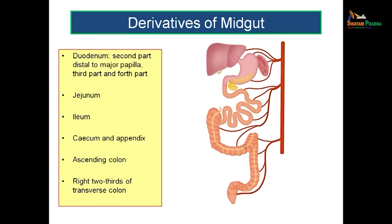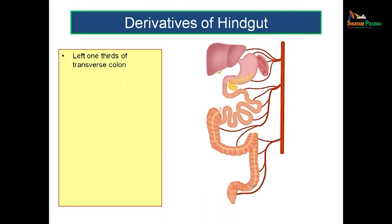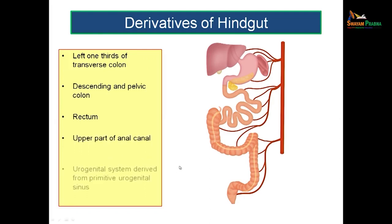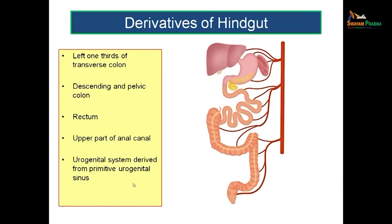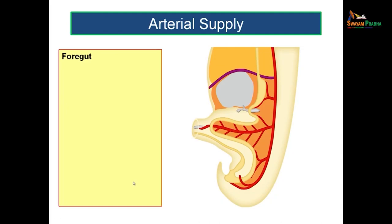The structures derived from the hindgut are the left one-third of the transverse colon, the descending colon, the pelvic colon, the rectum, and the upper part of the anal canal. Along with this, the urogenital system is also derived from the primitive urogenital sinus, which is actually a part of cloaca, and is therefore also a derivative of the hindgut. Now let us see about the arterial supply — each of the foregut, midgut, and hindgut has its own arterial supply from the abdominal aorta.